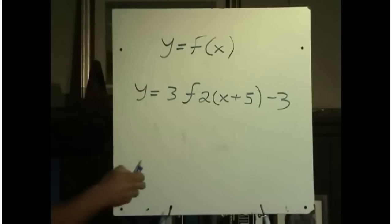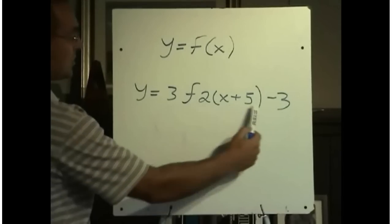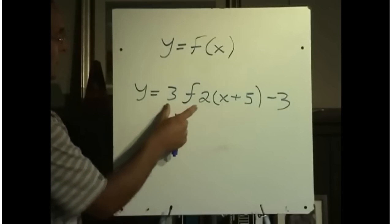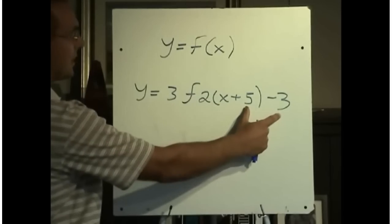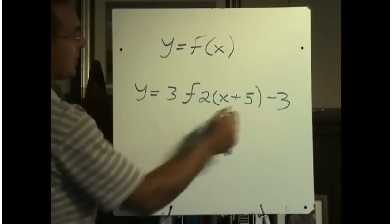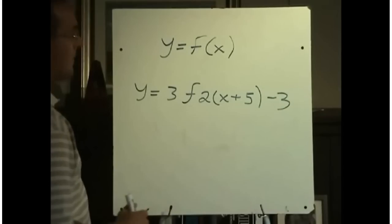It's very important to understand that when we're given transformations in function notation like this, that we always do expansion compressions first, and the very last thing that we would do is we would do the translations, the left, right, and the up-down. So if you can remember to always do the left, right, up, down last, then you should be okay.